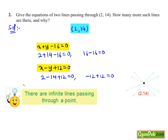So there are infinitely many such lines passing through 2,14 because through a point an infinite number of lines can be drawn.